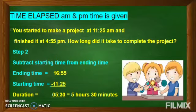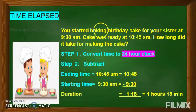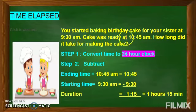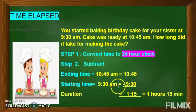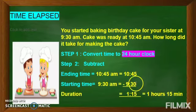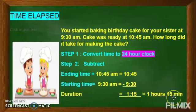Let us see one more example. You started baking a birthday cake for your sister at 9:30 AM — that is the starting time — and the cake was ready at 10:45 AM. How long did it take to make the cake? First, convert to 24-hour clock: 10:45 AM is 10:45 hours, and 9:30 AM is 9:30 hours. Minutes minus minutes: 45 minus 30 is 15, and 10 minus 9 is 1. So the duration of making the cake was 1 hour 15 minutes.